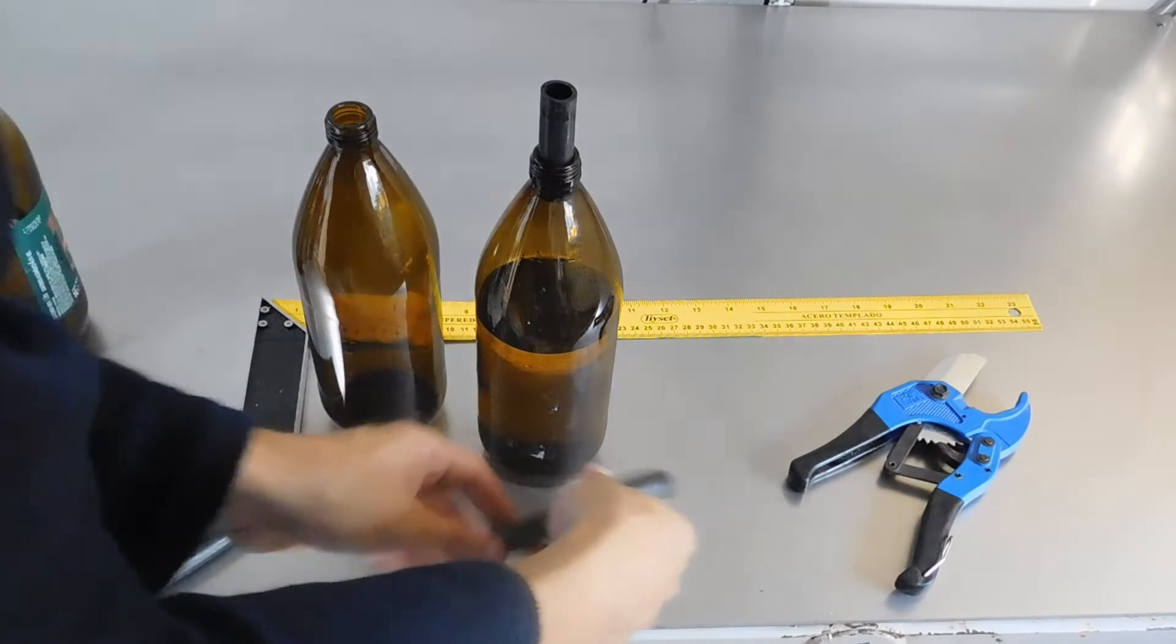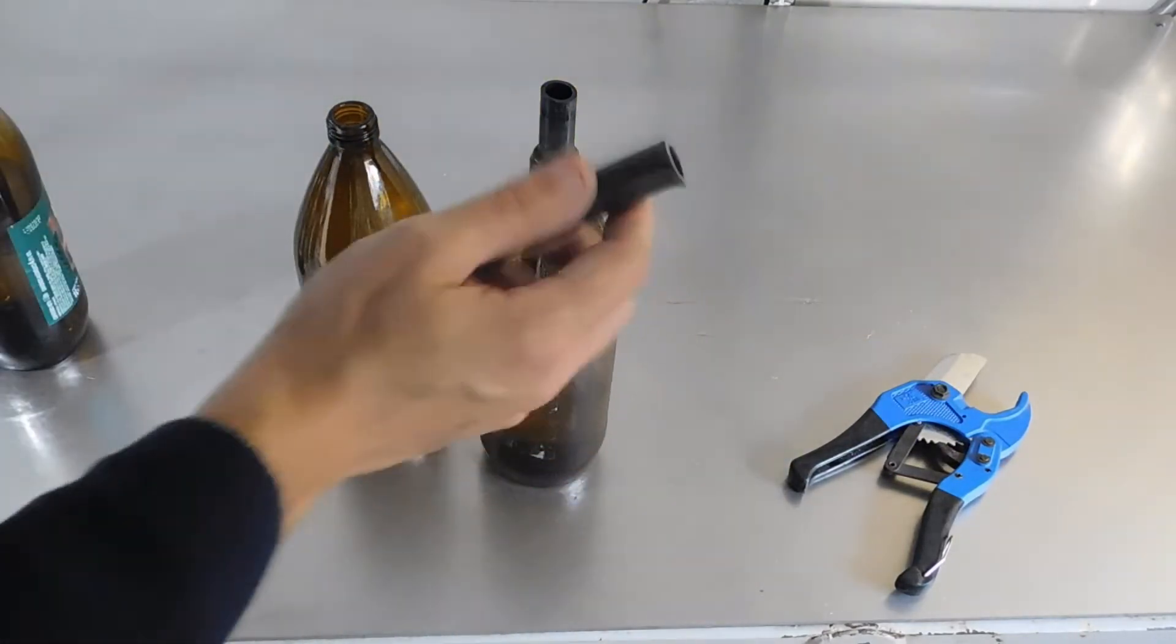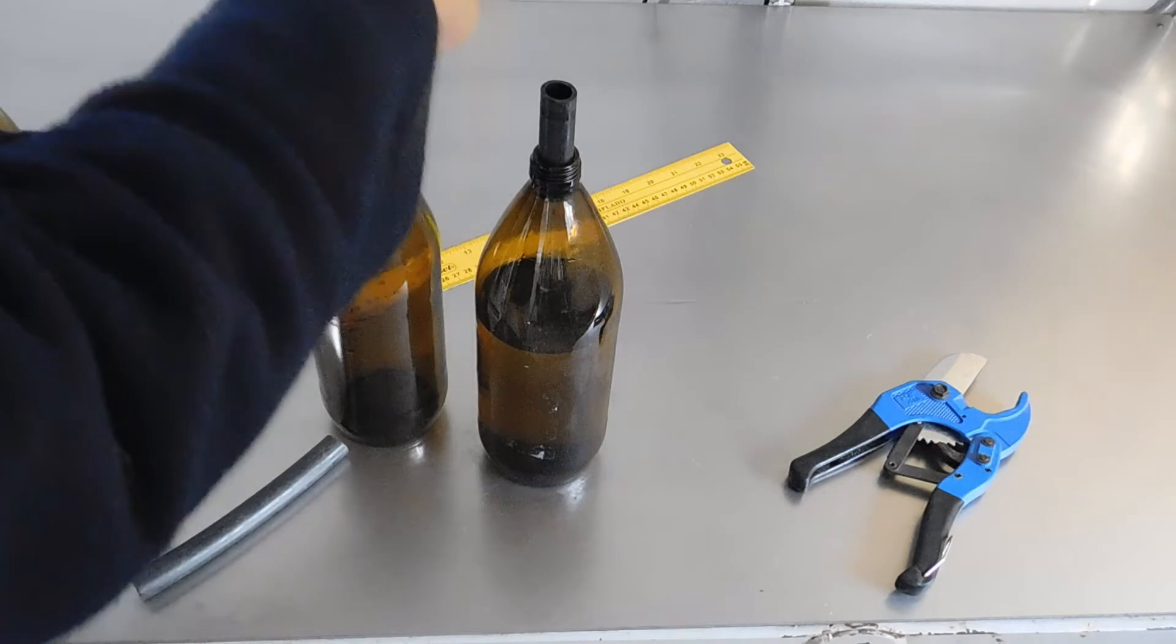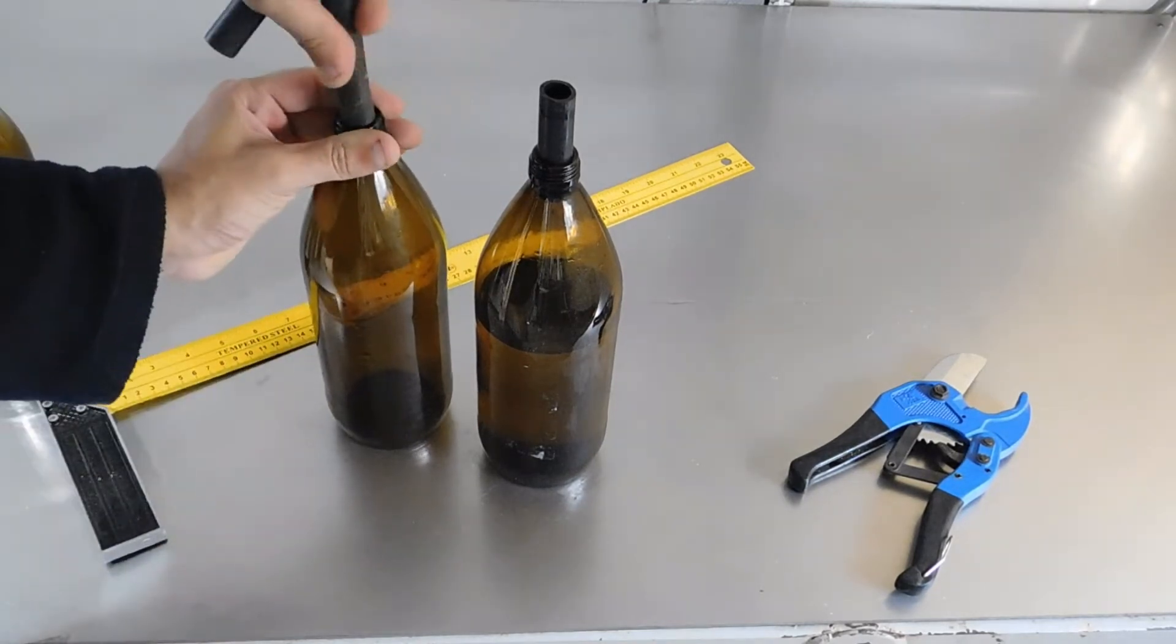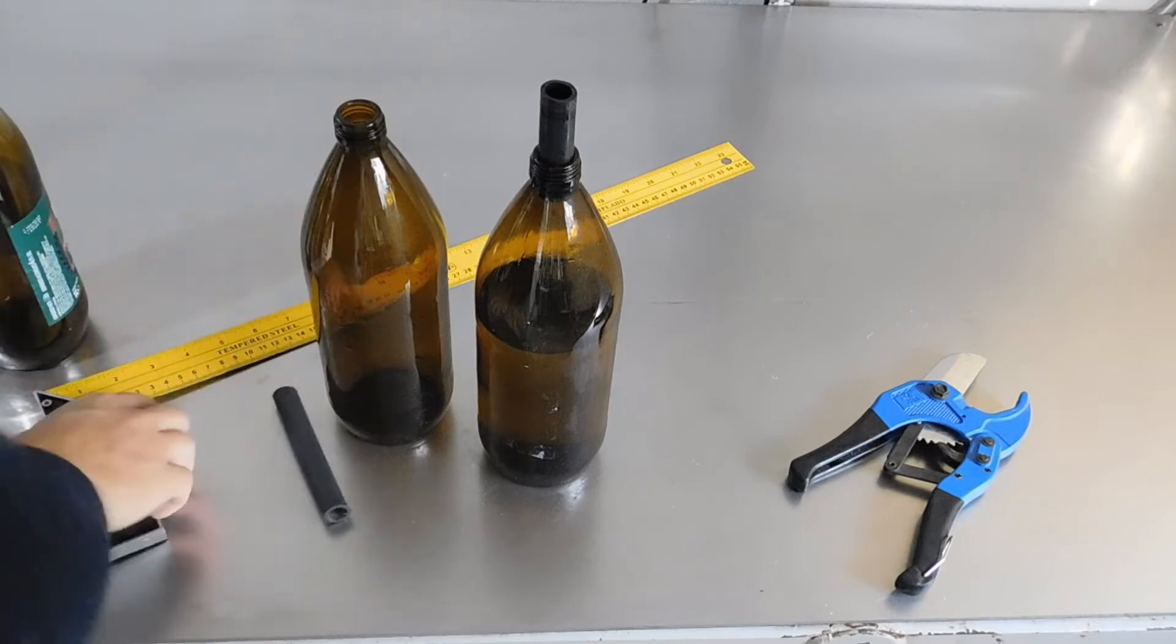Les voy a mostrar entonces, por último, el diámetro del caño este que entra bastante grueso. Es este, este es el grueso. Les voy a mostrar el diámetro con una regla para que les hagan mis ideas.